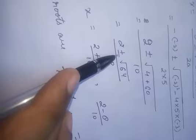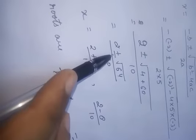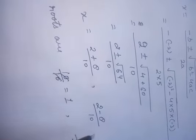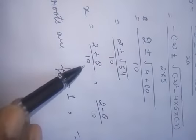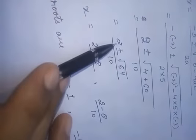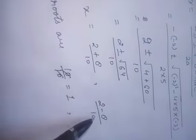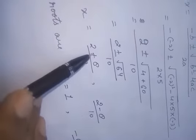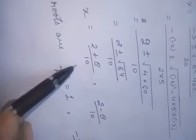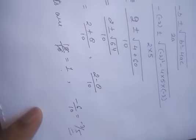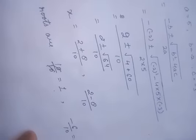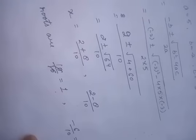Since √64 = 8, we get x = (2 ± 8) / 10. With the plus sign: (2 + 8)/10 = 10/10 = 1. With the minus sign: (2 - 8)/10 = -6/10 = -3/5. This is the most important topic for the board exam — the quadratic formula.